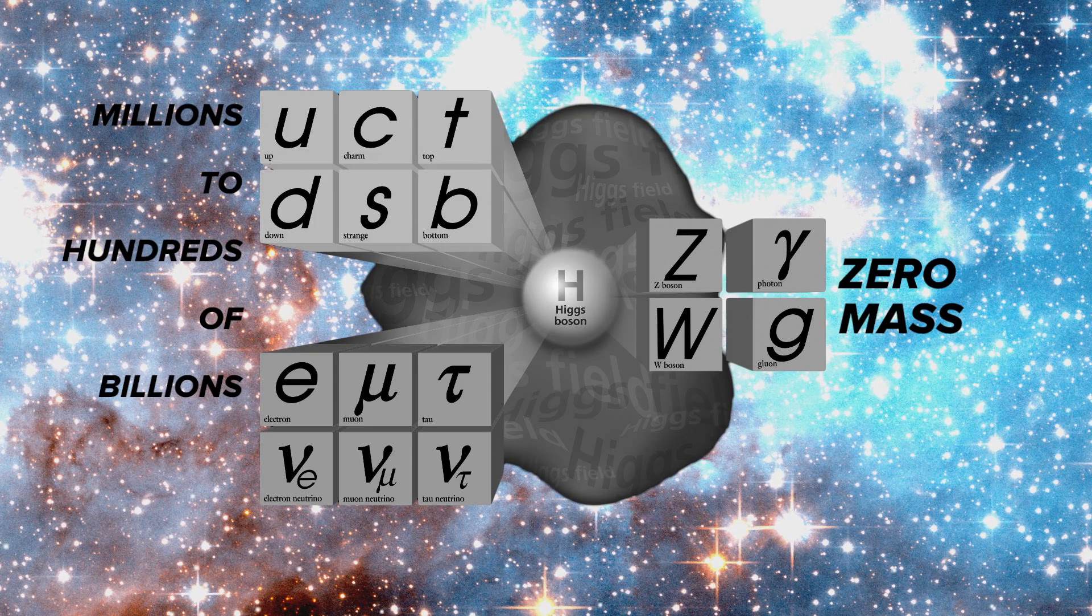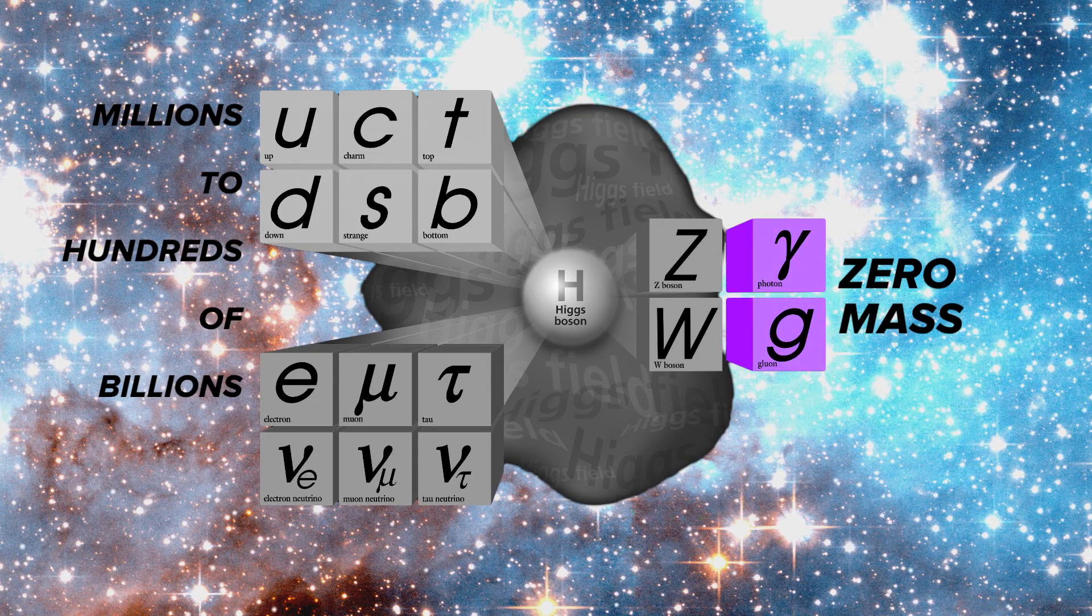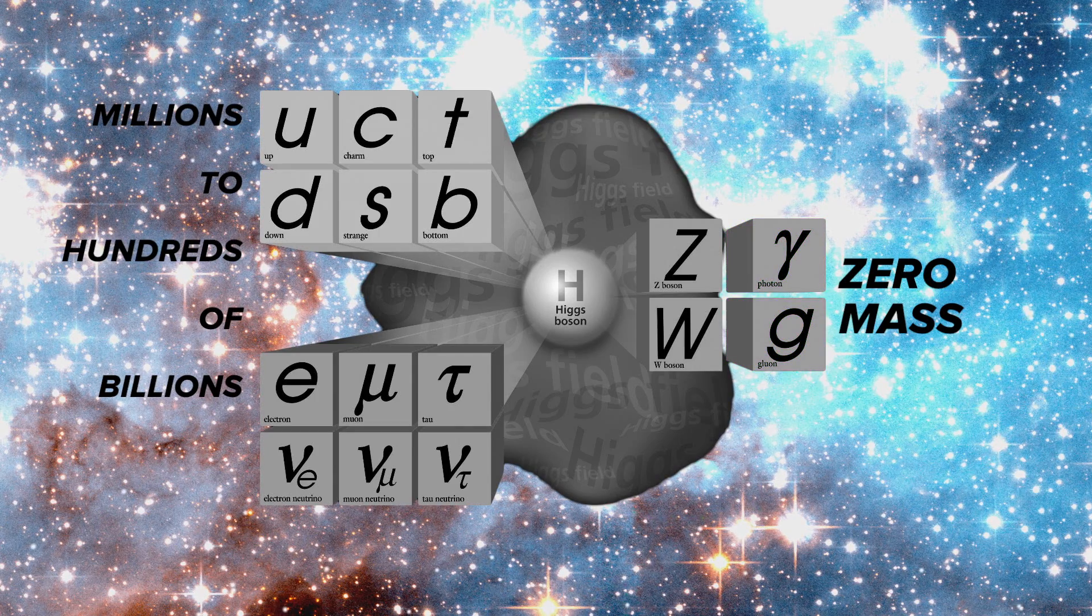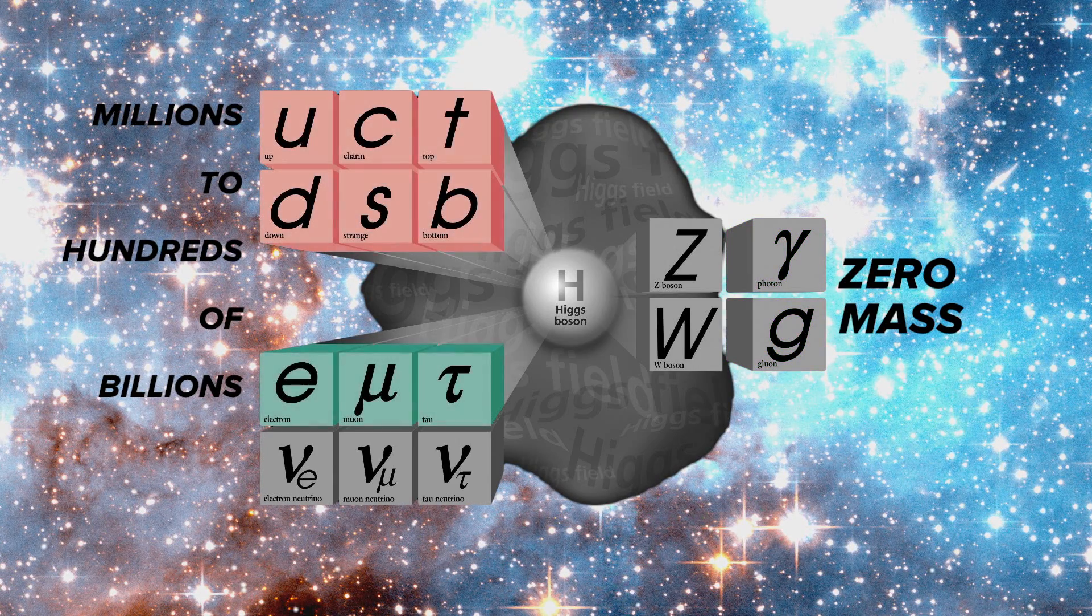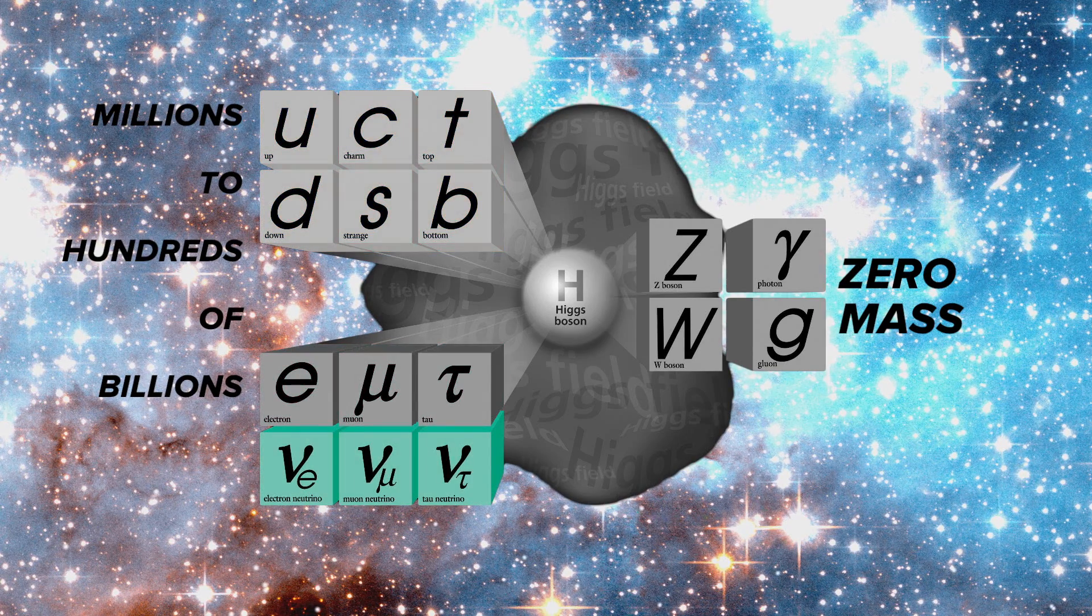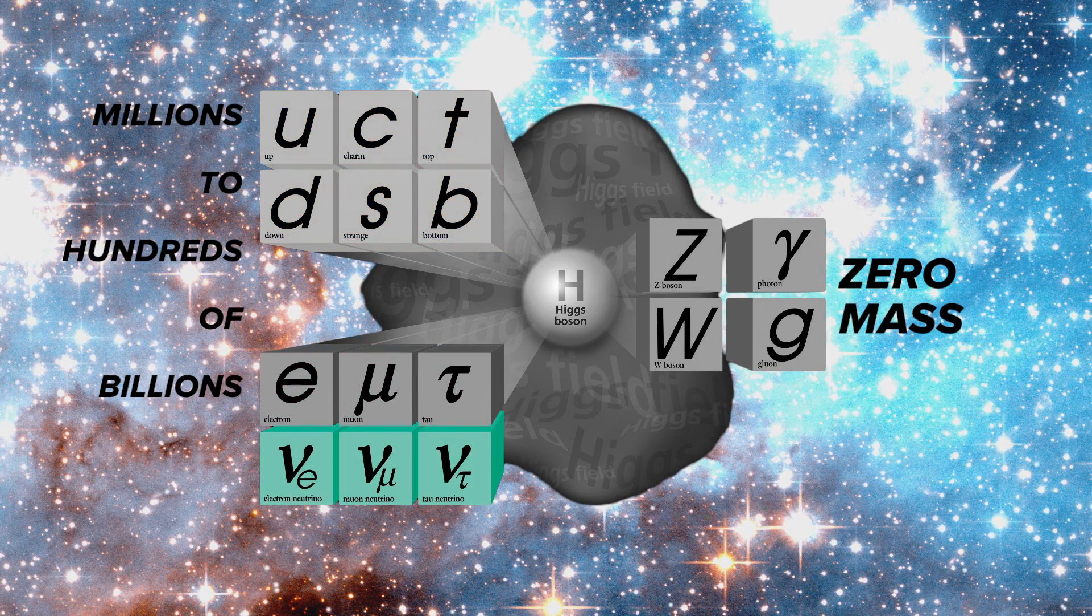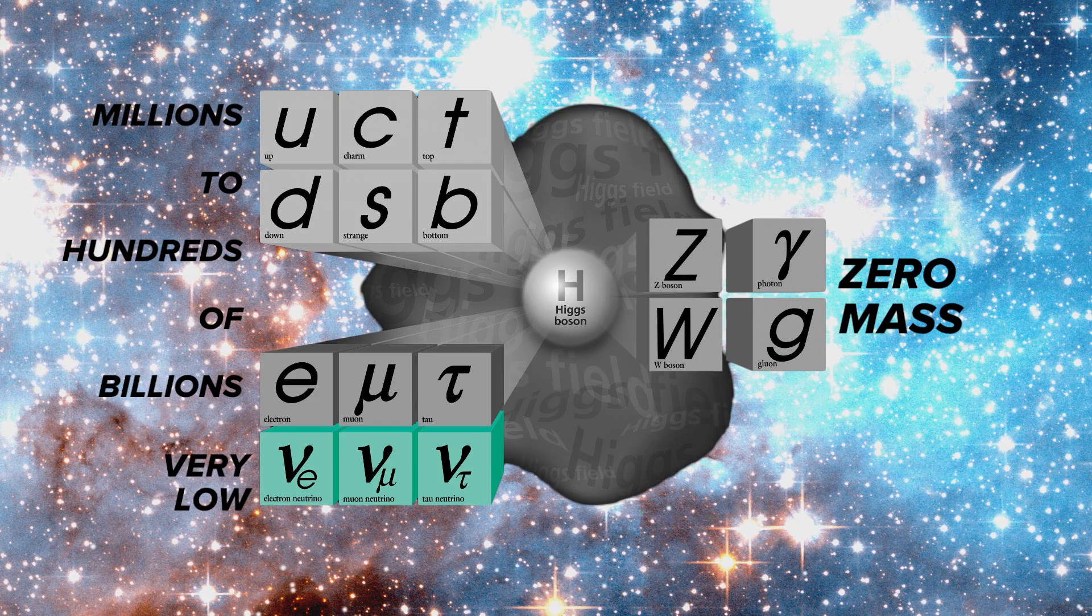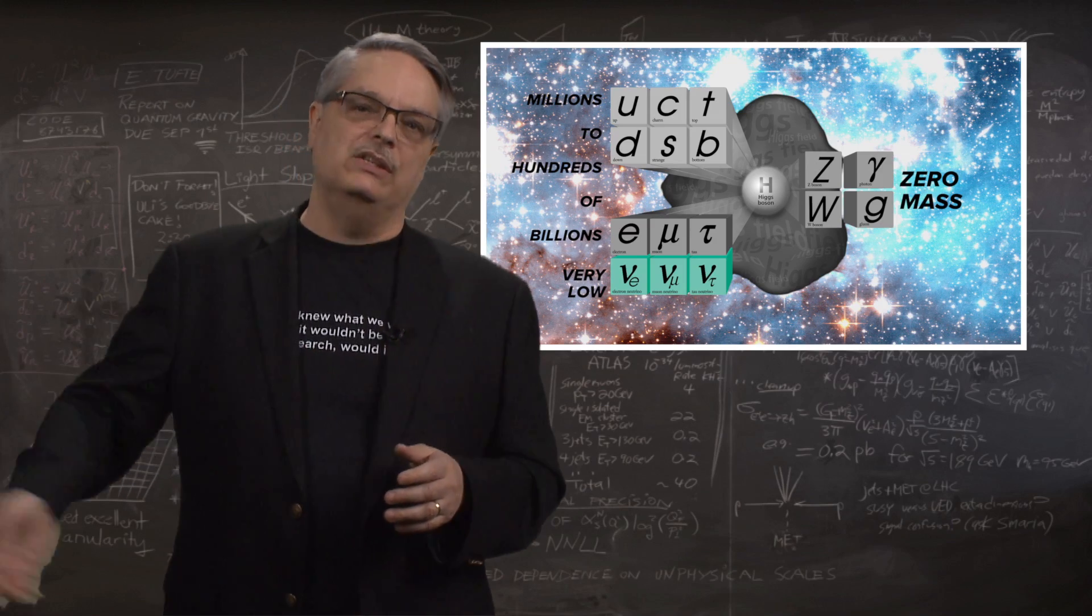So there are these two classes, particles with zero electron volts of mass, and those with a mass of about a million electron volts or more. Now, the neutrinos seem to be yet in another class. We don't know their mass, but they seem to be very low, very close to zero, but not exactly zero.